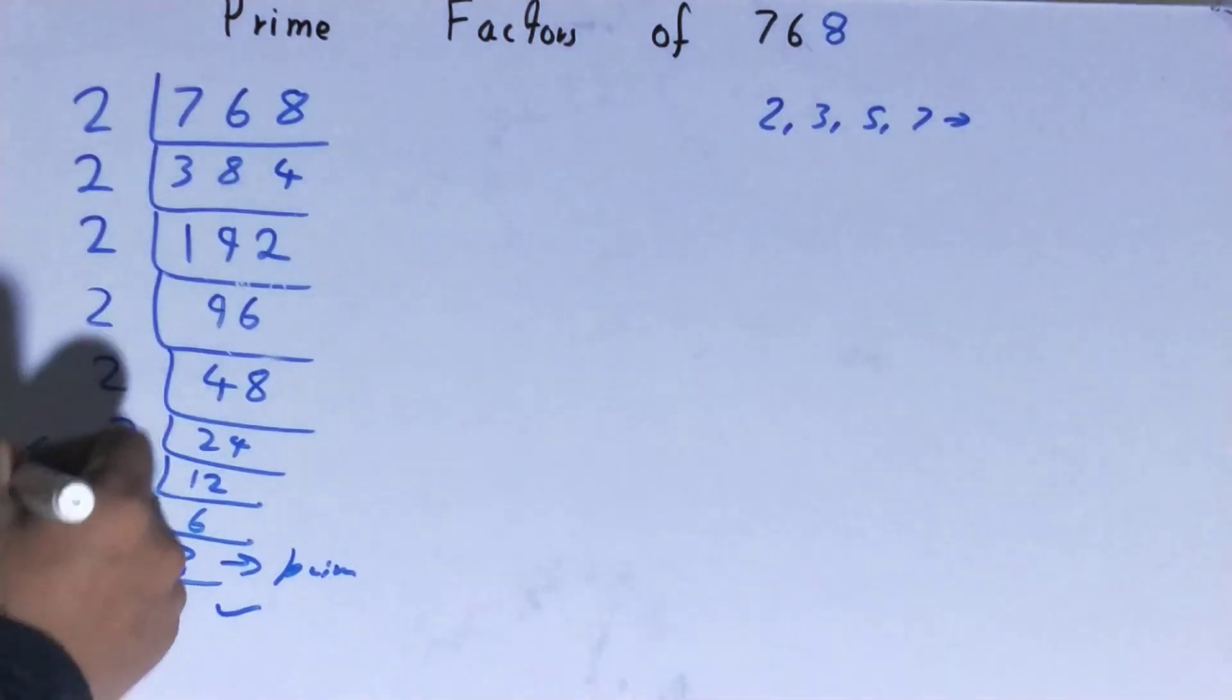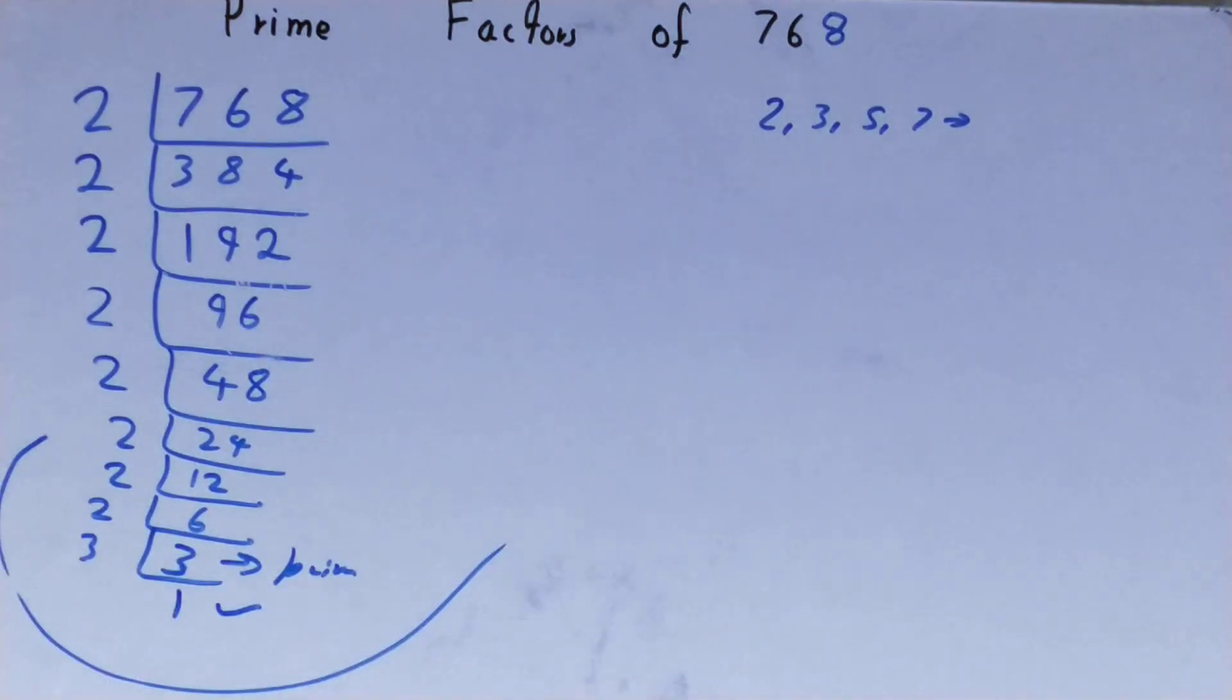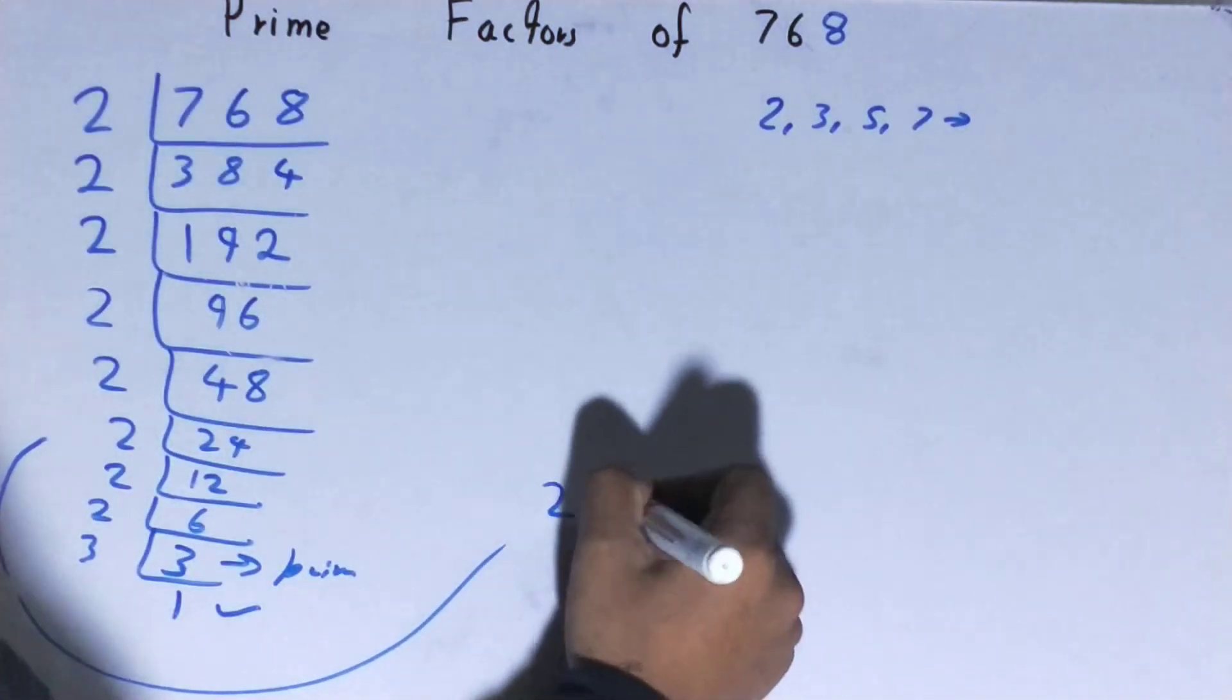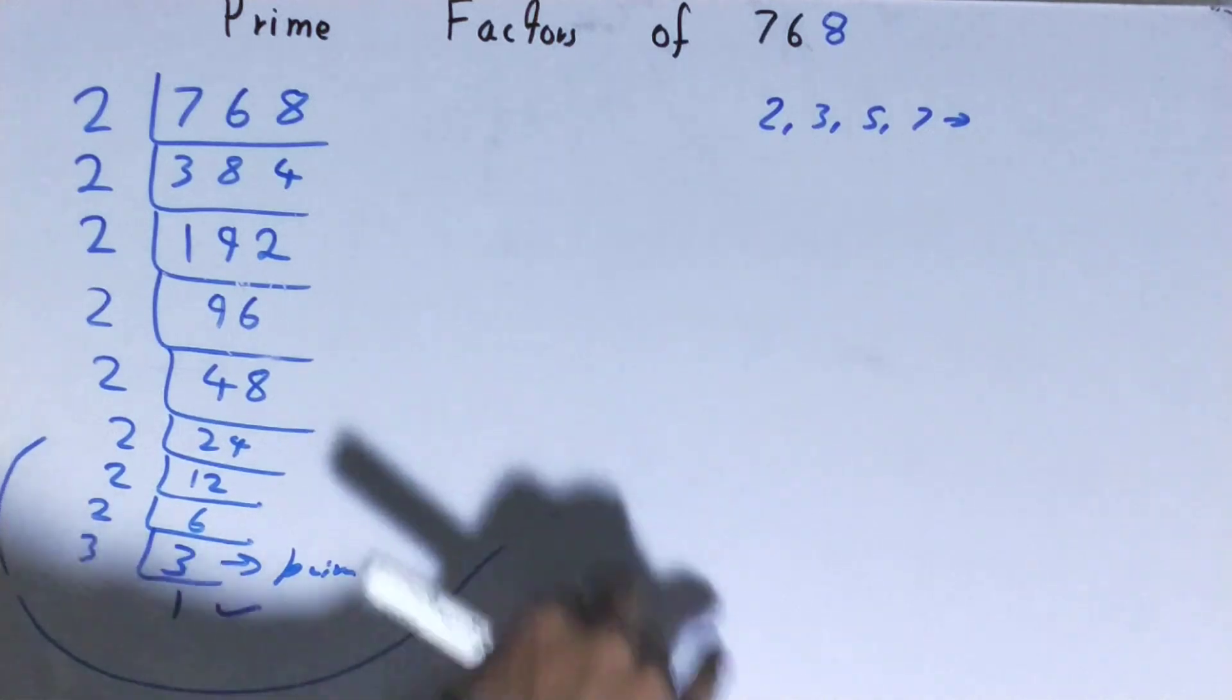Whatever you have on the left hand side will be the prime factors of 768. Because there are too many 2s here, I'm writing it in a different way. You can write it in a cross form like 2 × 2 × 2, but I'm writing it in a shortened form.